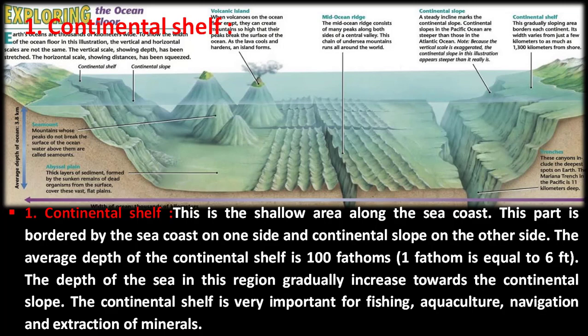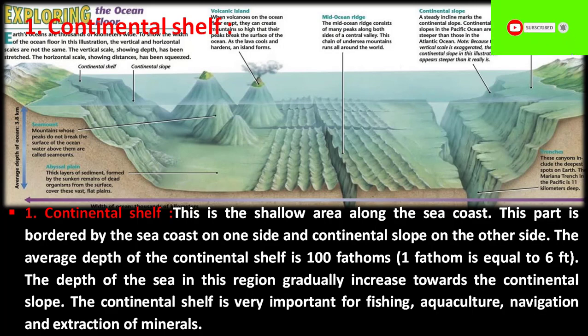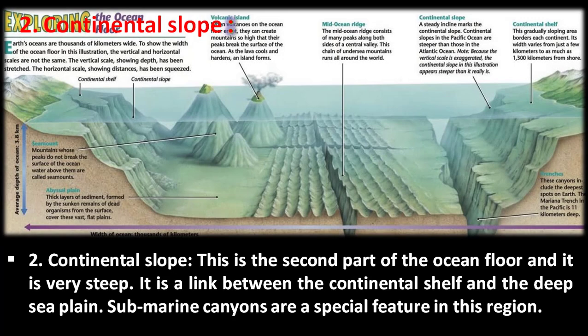The first part is the continental shelf. This is the shallow area along the sea coast, bordered by the sea coast on one side and the continental slope on the other side. The average depth of the continental shelf is 100 fathoms — one fathom equals six feet. The depth gradually increases towards the continental slope. The continental shelf is very important for fishing, aquaculture, navigation, and extraction of minerals.